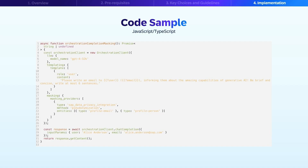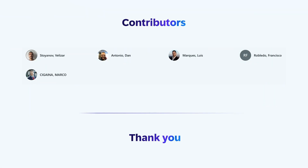This concludes our overview of data masking. We've covered the benefits, reference architecture, prerequisites, implementation steps, key decision factors, and implementation guidelines with a practical code example. The best practice guide reflects the collective expertise of AI specialists from across SAP, bringing together insights to support your journey. Thank you for watching this session on data masking. We hope the information provided helps you successfully implement AI capabilities in your business applications.